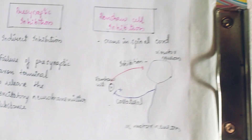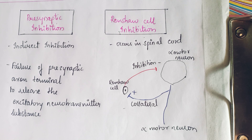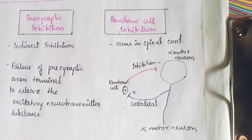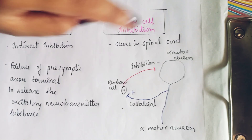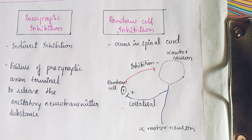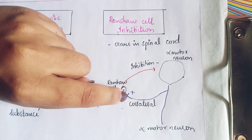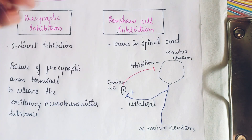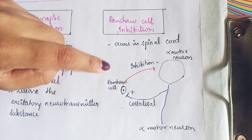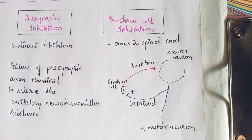Then we come to Renshaw cell inhibition. In the spinal cord, the anterior nerve root consists of nerve fibers — basically the alpha motor neurons — which have collateral fibers ending one in the normal pathway and one in Renshaw cells. These Renshaw cells are small motor neurons situated between the large alpha motor neurons. When motor neurons send motor impulses, some impulses reach the collateral and stimulate the Renshaw cell, which in turn sends inhibitory impulses back to the alpha motor neuron, causing inhibition.